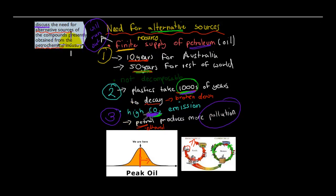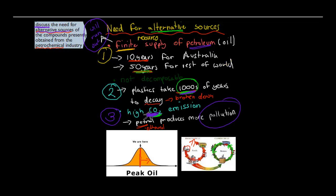So these three reasons were the discussed reasons why we need to have an alternative source, such as biomass, for production of petrochemicals. In this one we've got Analyze, which is a pretty big verb. Analyze progress in the recent developments and use of a named biopolymer. We had PLA or polylactic acid. Name the specific enzyme used or organism used to synthesize the material. We have corn starch and we hydrolyze it to glucose. We can go from glucose to lactic acid using the lactobacillus bacteria, that was the specific organism, or the rhizopus fungi.